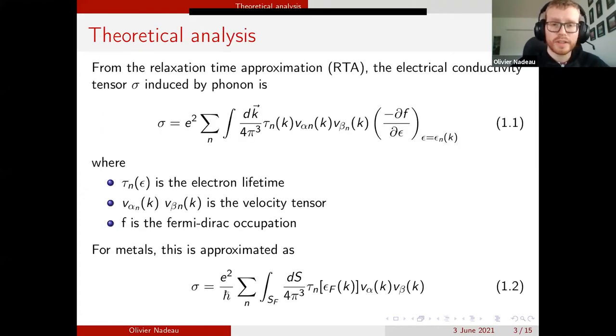We start from the relaxation time approximation where the electrical conductivity can be expressed as equation 1.1. For metal, we can approximate the derivative of the Fermi-Dirac occupation to obtain equation 1.2.